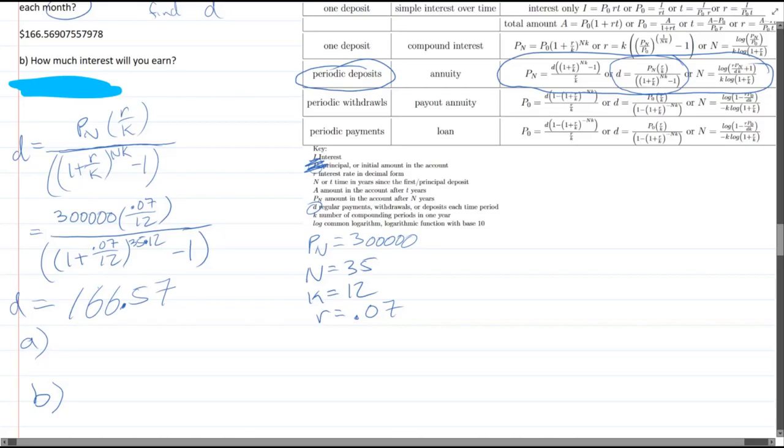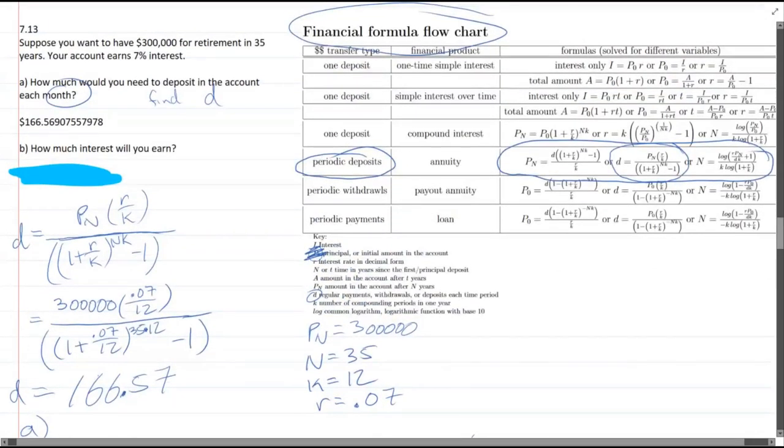How much interest will you earn? Part B. You want to find your total deposit. And then you want to, the total amount minus your total deposit. So your total deposit. We did that 166. We better use the exact 56907. That's probably good enough. Total deposit. So it's this much per month, times 12 months in one year, times 35 years.